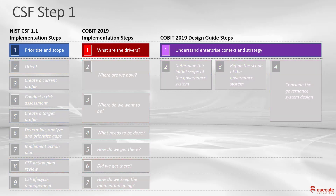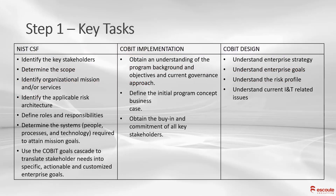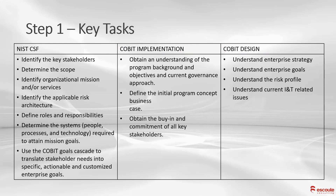The first step on the NIST CSF is to prioritize and scope. With COBIT implementation, we determine the drivers. And with the Design Guide, it's understanding enterprise context and strategy. The purpose here is to obtain an understanding of the organizational governance approach to inform risk assessment activities and prioritize security activity — we're setting a baseline. I've broken these out into key tasks from each of the frameworks. This will also be available as a download in the course downloads.